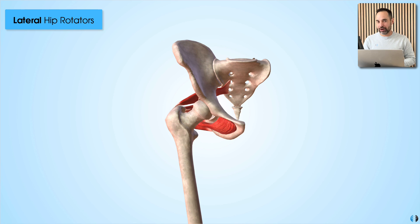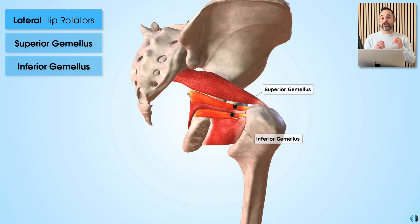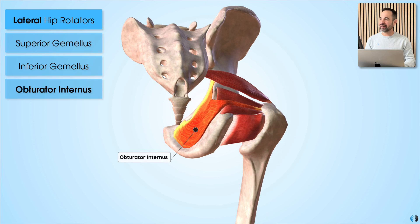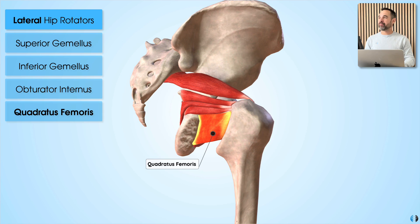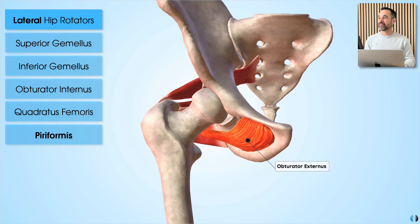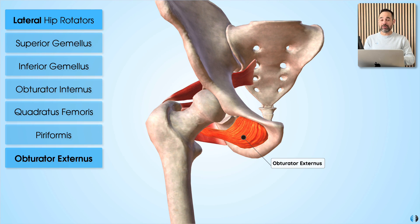Next, let's explore the lateral rotators of the hip. Diving posteriorly, we have the superior and inferior gemelli muscles — also known as gemellus superior and gemellus inferior. We then have obturator internus, also on the posterior aspect of the hip, which originates from the internal side of the obturator foramen. We also have quadratus femoris and piriformis. Running around to the anterior surface of the hip, we can see obturator externus, which originates from the external side of the obturator foramen.